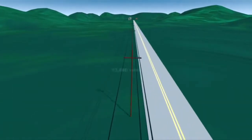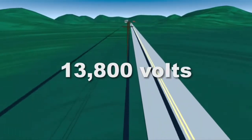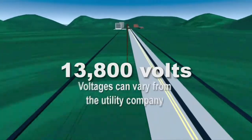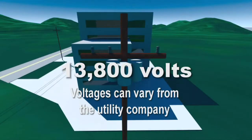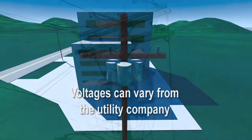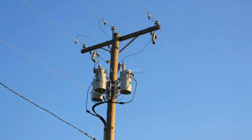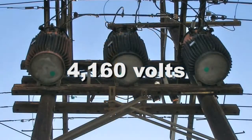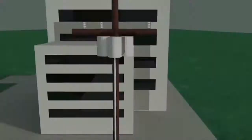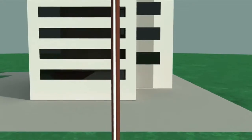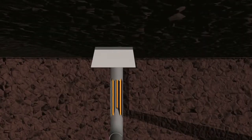In our example, we begin with the utility company supplying 13,800 volts from the road to a utility pole in the parking lot. At the top of this pole, you see three transformers. These transformers will step down the 13,800 volts to 4,160 volts. This voltage is transferred down the pole through copper wires that are encased in conduit.